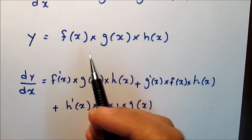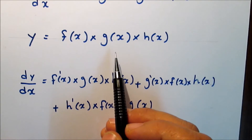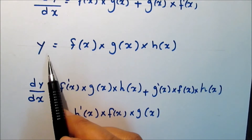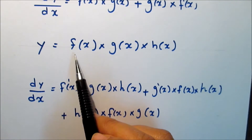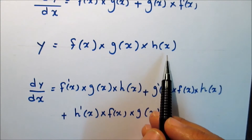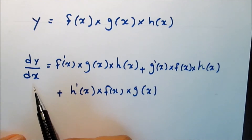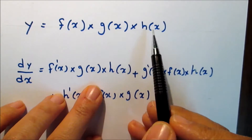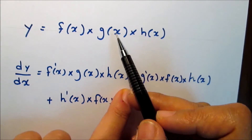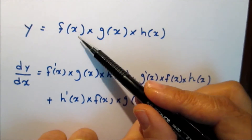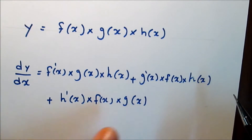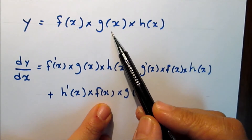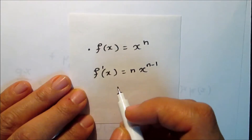The same rule is applicable for the product of three functions f, g, and h. So if y equals f times g times h, then dy/dx equals f' times g times h, plus g' times f times h, plus h' times f times g.